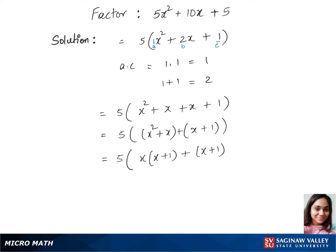In our next step we have 5 times, let's factor out x plus 1 from this, so that's x plus 1 times x plus 1. So let's put it as x plus 1 whole squared. That's our final answer.